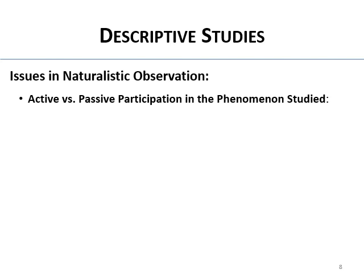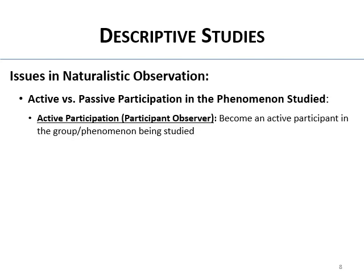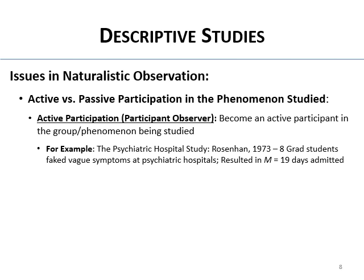There are issues with naturalistic observation — do you want to be an active or passive participant? Active participation, also called being a participant observer, means you actually become a participant in the group. The Rosenhan 1973 psychiatric study is a good example: he sent eight grad students who faked vague syndromes to different psychiatric hospitals throughout the U.S., and as participant observers they were admitted for a mean of about 19 days.